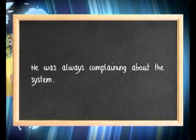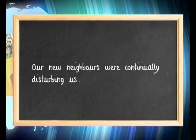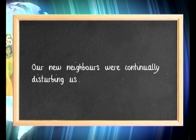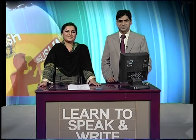This tense is also used for habits or attitudes that people maintained constantly — things they do not change. For example: 'He was always complaining about the system.' Some people kept the same pessimistic attitude, always complaining that this is wrong and that is wrong, but never making any effort to change the system. Another example: 'Our new neighbors were continually disturbing us.' And 'He was continually borrowing money' — no one would have liked him.